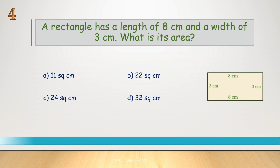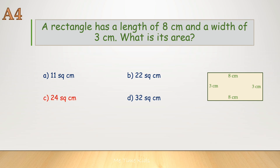A rectangle has a length of 8 centimeters and a width of 3 centimeters. What is its area? Correct answer is C, 24 square centimeters.